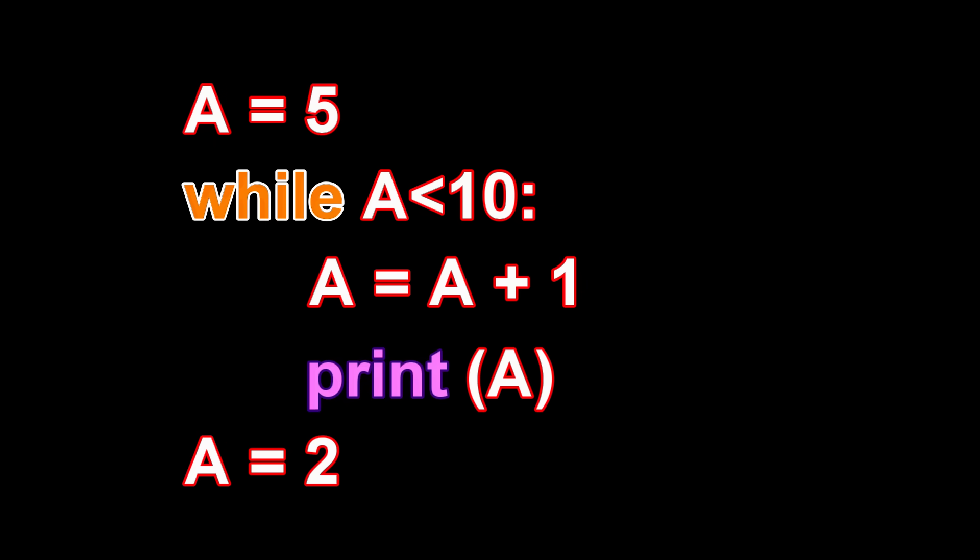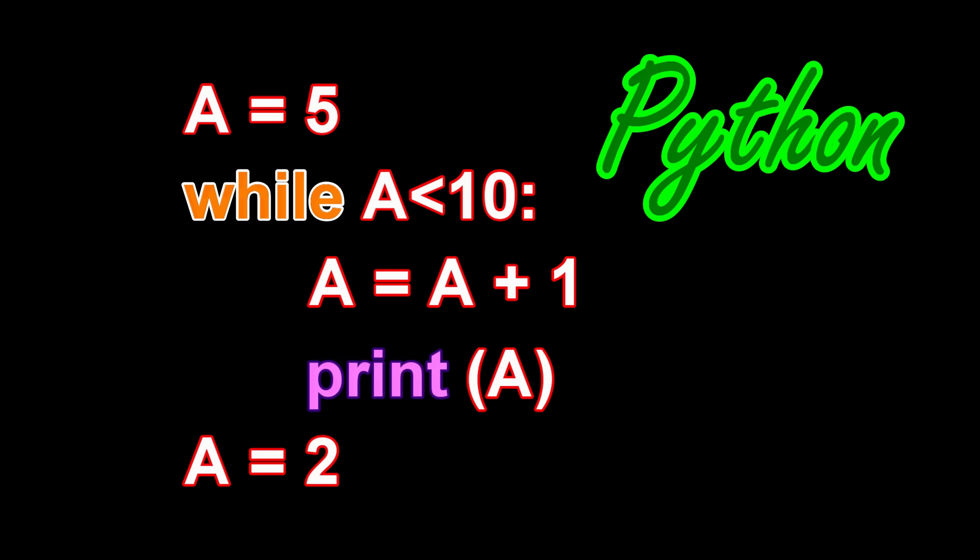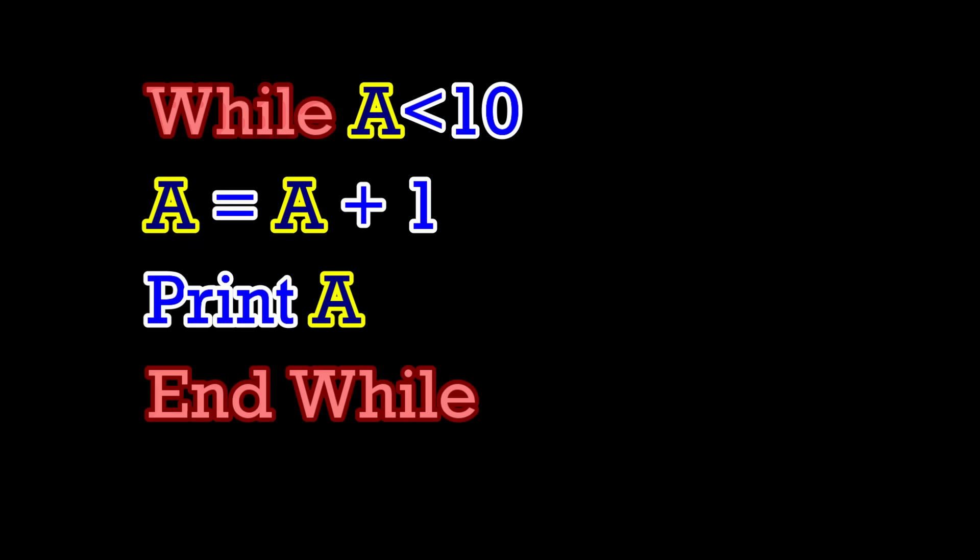In the language Python, the lines of code inside the while loop are indicated by indentation. In Python, it is critical that all the lines inside the while loop are indented by exactly the same amount. By contrast, in other computer languages, the indentations are ignored, and the lines of code inside the while loop are indicated by a statement indicating the end of the loop, such as the following example.